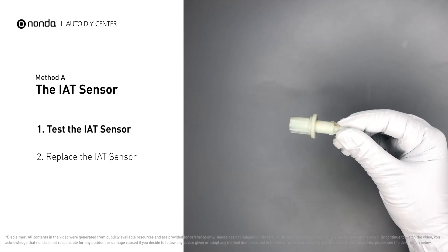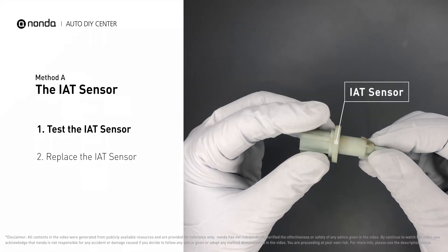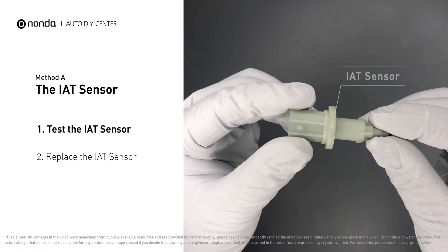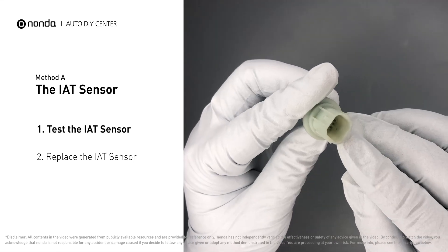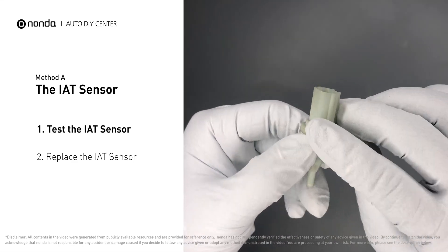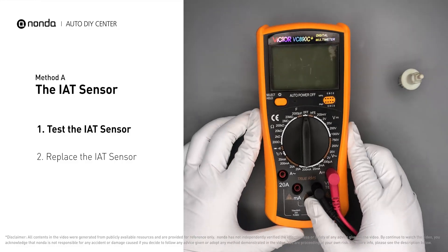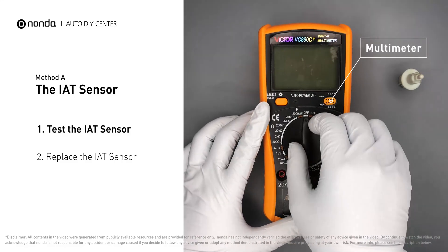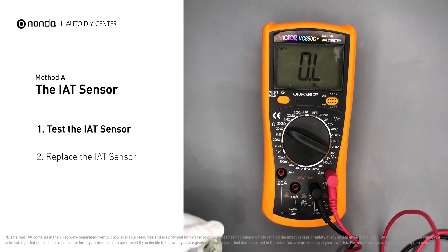First, carefully remove the IAT sensor from the vehicle. Visually inspect the sensor to make sure it hasn't been contaminated by a leak from another engine component. Use a multimeter to proceed with a test on the IAT sensor.